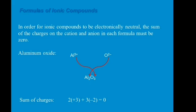Let's have the continuation on the formulas of ionic compounds. In order for ionic compounds to be electronically neutral, the sum of the charges on the cations and anions in each formula must be equal to zero to become neutral.